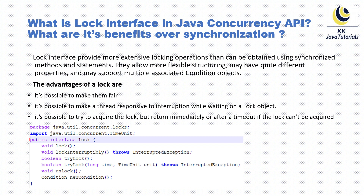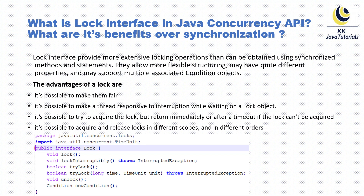The third advantage is that it is possible to try to acquire the lock but return immediately or after a timeout if the lock cannot be acquired. There are two tryLock() methods: one that takes no parameters, which tries to acquire the lock and returns immediately if the lock is not available; and another tryLock() that accepts a time and time unit — milliseconds, seconds, minutes, hours, etc. With the timed tryLock(), the thread will keep trying to acquire the lock until the specified time elapses, then return if unsuccessful.